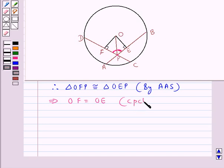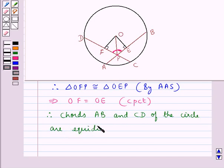That is, the corresponding parts of congruent triangles are equal. So therefore, the chords AB and CD of the circle are equidistant from the center of the circle.